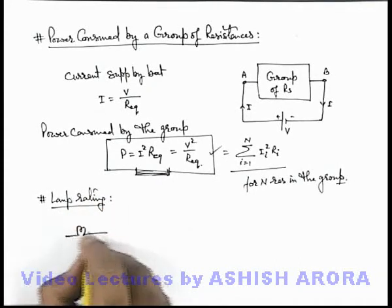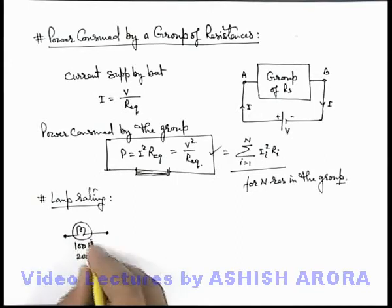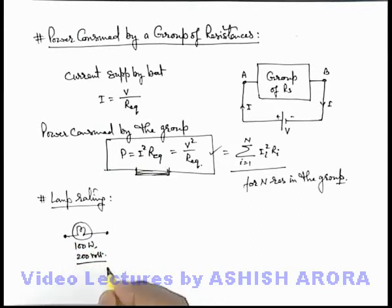Like say if we are given a lamp which is of power hundred watt at two hundred volt, that means this is the lamp which consumes hundred watt at the potential difference of two hundred volt.